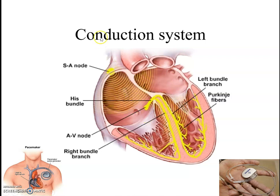The SA node is located at the opening of the superior vena cava. The AV node is located at the auriculo-ventricular septum, in the inter-auricular septum. The SA node is the sino-auricular node — an important part of this conduction system.